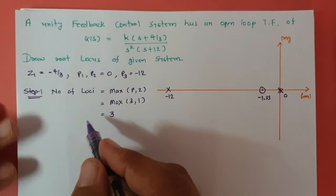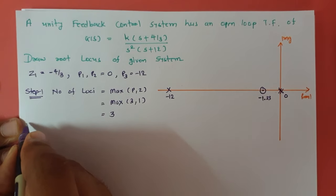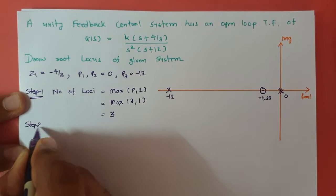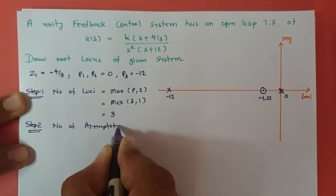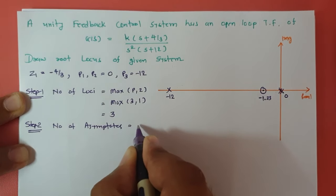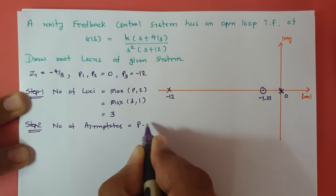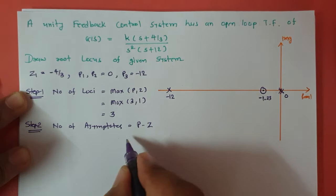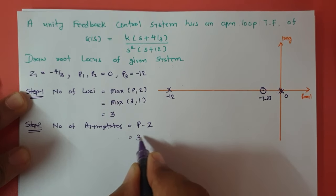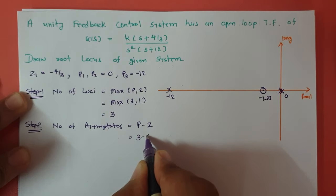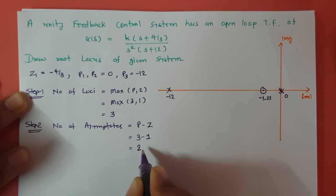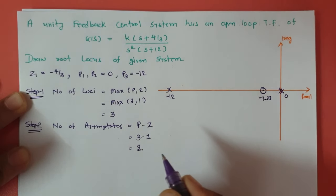The second step is to identify the number of asymptotes. Number of asymptotes equals number of poles minus number of zeros. Number of poles is three and number of zeros is one, so there will be three minus one — meaning two asymptotes.